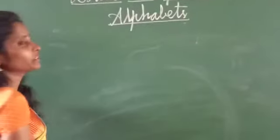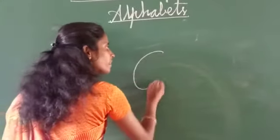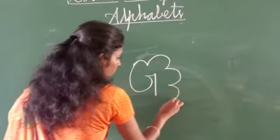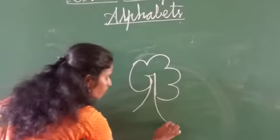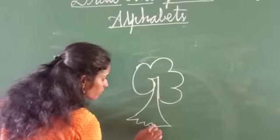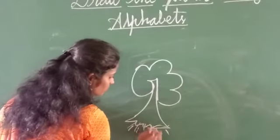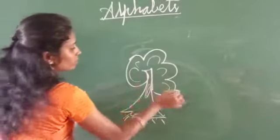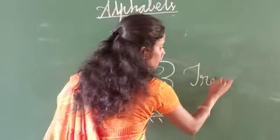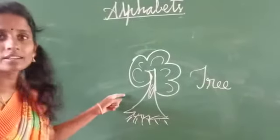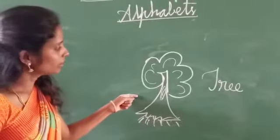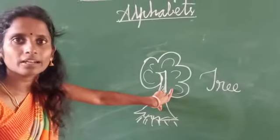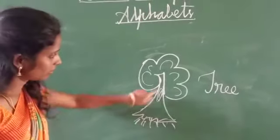Next we go to alphabet G. This is tree. This is tree. It is useful to make a green environment. It is useful to make a green environment. Tree.